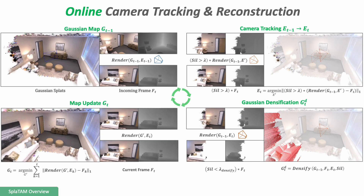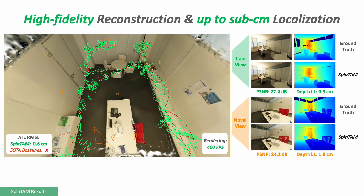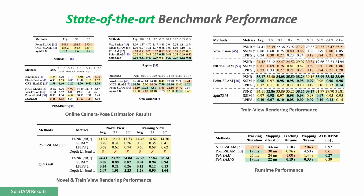This process continues, enabling SPLATAM to perform online camera tracking and reconstruction. We find that this simple yet effective pipeline enables SPLATAM to achieve high-fidelity reconstruction and sub-centimeter camera tracking in challenging scenarios, including aggressive camera motion and textureless environments. This is further supported by our quantitative analysis of camera tracking and reconstruction on various benchmark datasets.